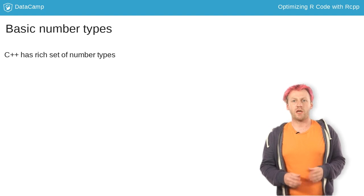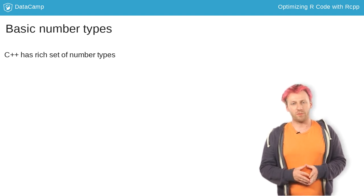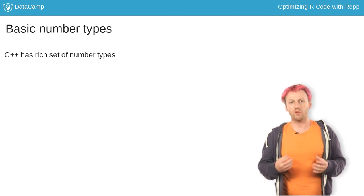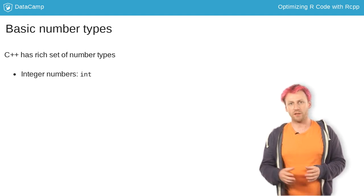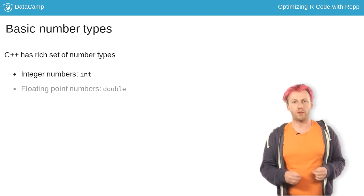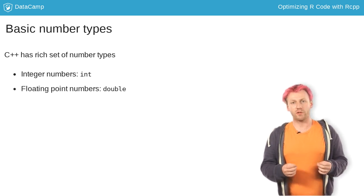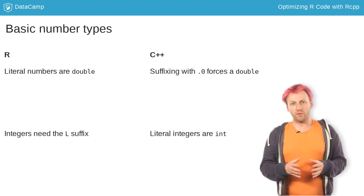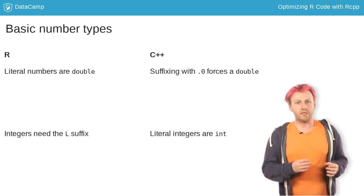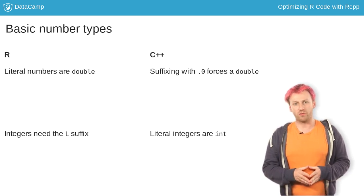C++ has a rich set of basic number types. You will only use integers of type int and floating point numbers of type double, because those are the types used in R. There's a difference between R and C++ about literal numbers.